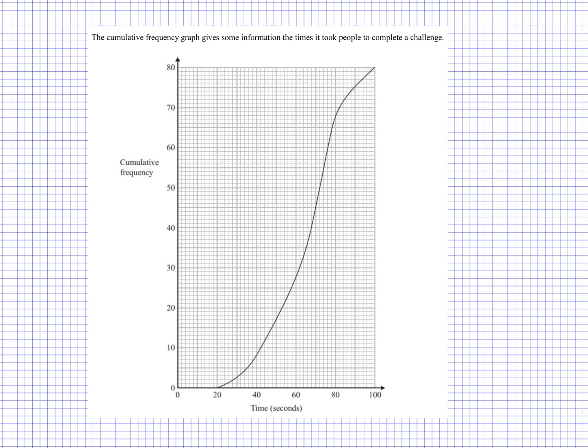Let's start with the median. The median will be found in the middle point of the data. So if there are 80 people here, we are looking at 40 for that. So we look across 40 and we take the reading here for the time in seconds, and that will be our median.